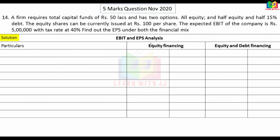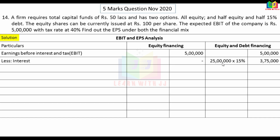Option one is full equity financing and option two is equity and debt combined. EBIT is Rs. 5 lakh for both options. For option two, half of 50 lakh is 25 lakh in debt. Interest on 25 lakh at 15% equals Rs. 3,75,000. Under option one, interest is zero.